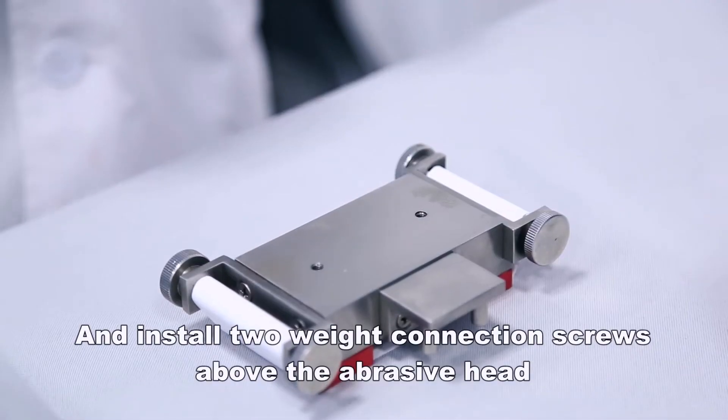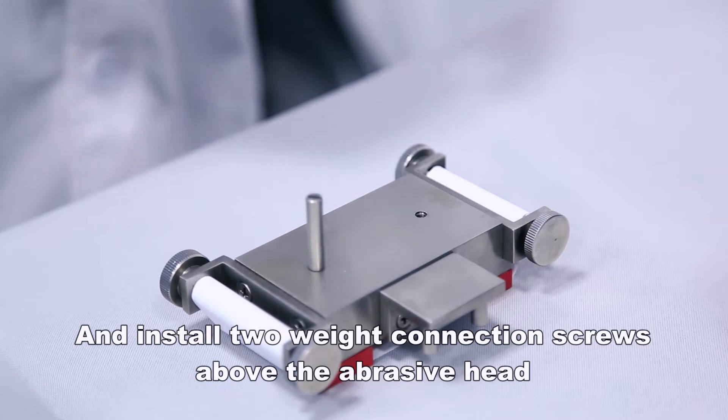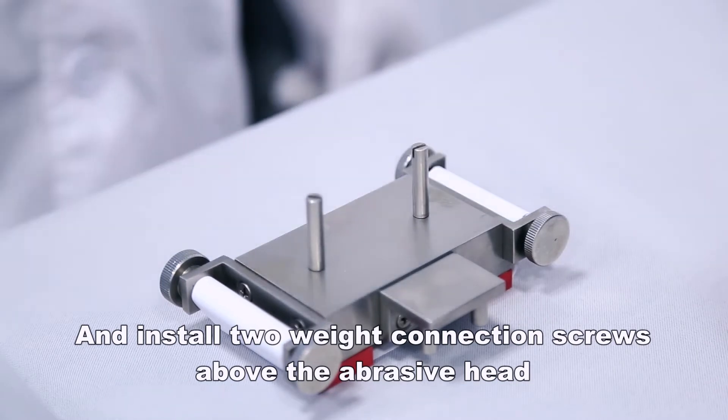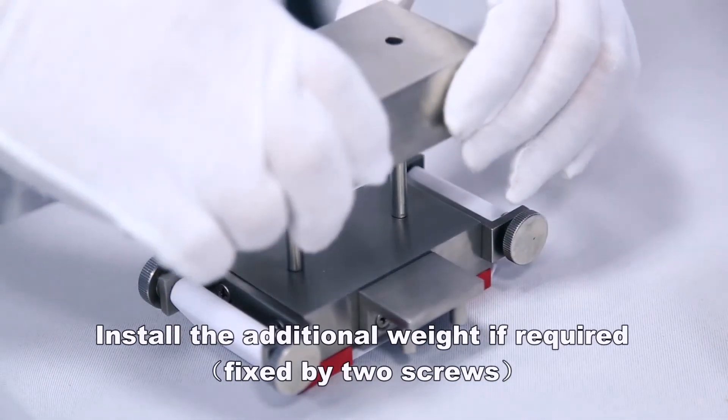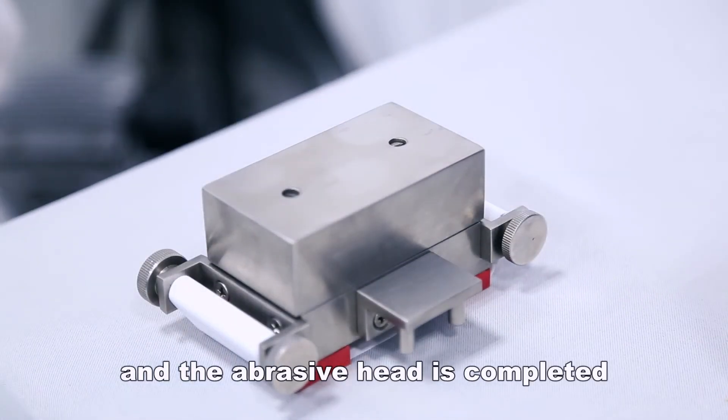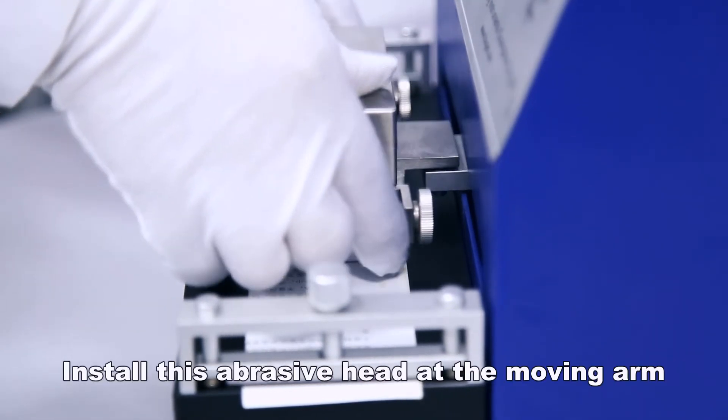Install two weight connection screws above the abrasive head. Install the additional weight if required, fixed by two screws, and the abrasive head is completed. Install this abrasive head at the moving arm.